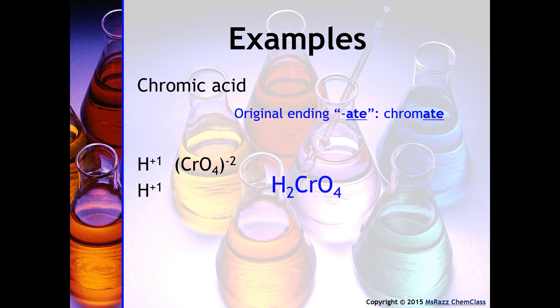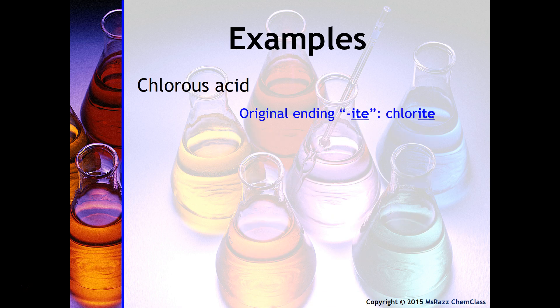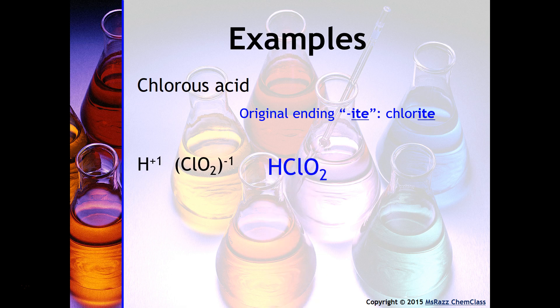For chromic acid: H⁺¹ with CrO₄²⁻ requires a second hydrogen, giving H₂CrO₄. For chlorous acid, the 'gingivit-us' mnemonic applies — the -ous ending means the original anion was -ite, so we are talking about chlorite. Since H is +1 and ClO₂⁻ is -1, the formula is HClO₂.